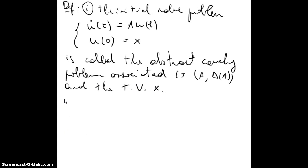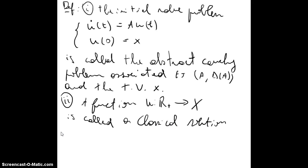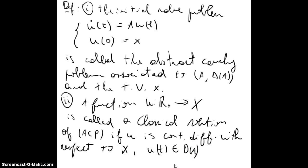A second definition: we have that a function u from R+ to the Banach space X is called a classical solution of the abstract Cauchy problem if u is continuously differentiable with respect to t, u(t) is in D(A) for all t greater than or equal to zero, and the abstract Cauchy problem holds.